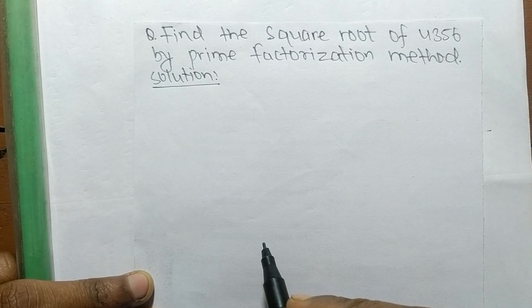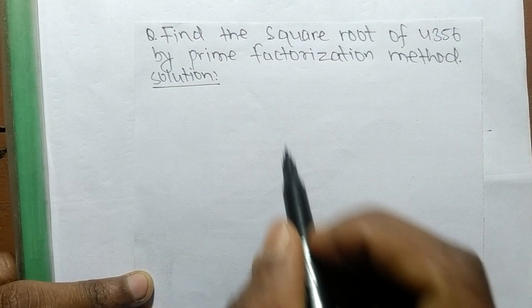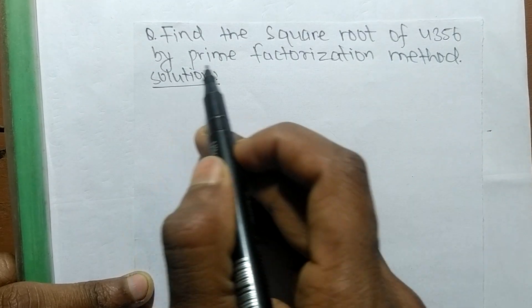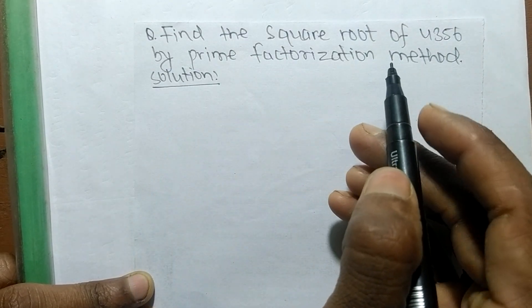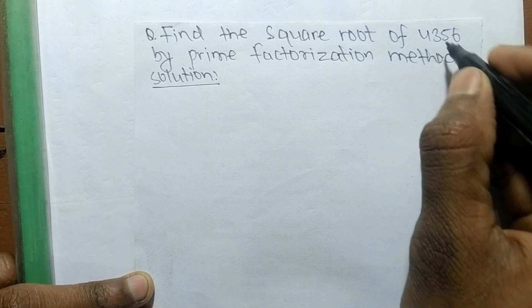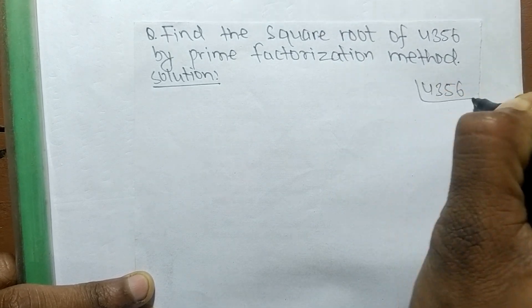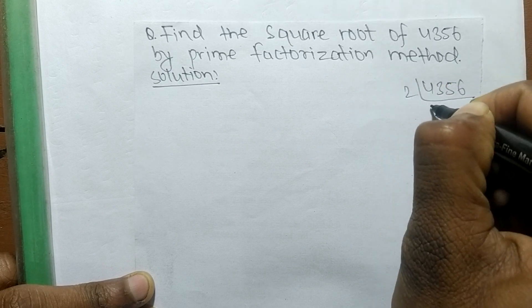So today in this video we shall learn to find the square root of 4356 by prime factorization method. First, we shall find out the prime factors of 4356.